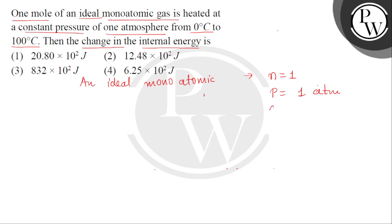The initial temperature θ₁ is 0 degree Celsius. In Kelvin conversion, it will be 273 Kelvin. And the final temperature is given at 100 degree Celsius.